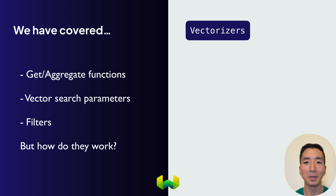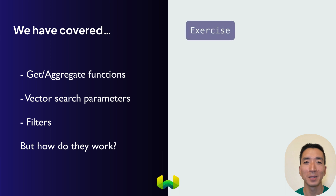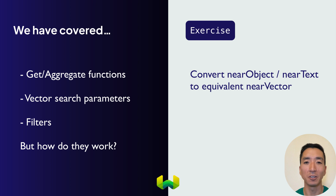We'll cover more on vectorizers very soon, but for now just know that they are what Weaviate uses to convert objects like text or image to a vector. You'll see in this section a demonstration of this by taking near object or near text searches and converting them to equivalent near vector searches.